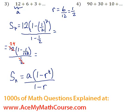So 12 times 2 is 24. So here we have 24. And 1 minus 1 over 128.